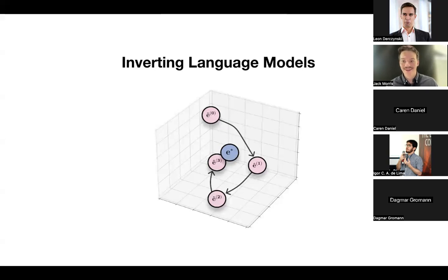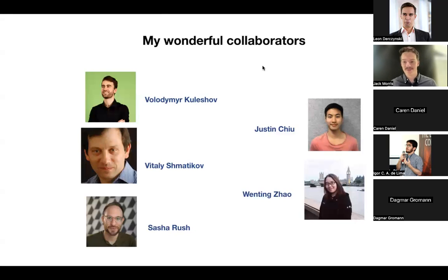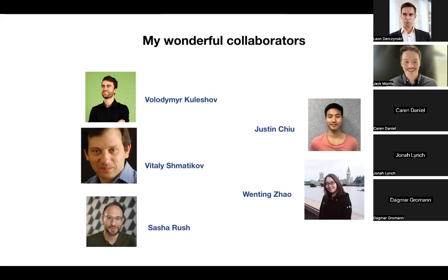The main thing I'm going to talk about today is the problem of taking an embedding and attempting to reconstruct the text that produced it. We also have some upcoming work about reconstructing text given the outputs of language models — a similar problem. I'll give a shoutout to my collaborators at Cornell Tech: Vladimir Kuleshov, a machine learning professor; Vitaly Shmatikov, a privacy professor who gave us insight about framing privacy arguments in an embedding-related threat model; and Sasha Rush, my NLP advisor.